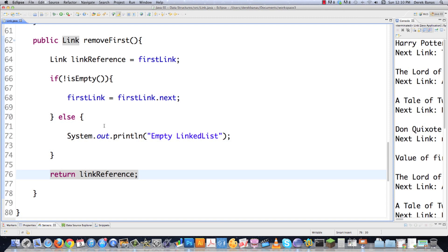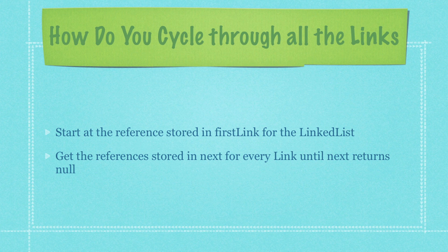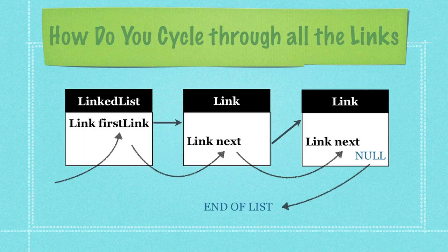To cycle through a linked list, we start at the reference stored in first link. We're going to cycle through first the last guy to move into town, and then the guy that moved in before that, and so on. We start at first link inside the linked list object, then get the references stored in next for every link until next returns null. In pictures: we ask first link who the last guy to move into town was, get that answer, then keep asking each link for the guy that moved in before it, until we hit a link that says nobody moved in before me — meaning next is null and we're done.